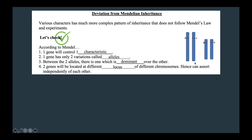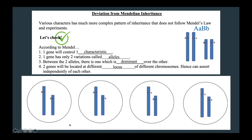For example, the genotype of this individual is capital A, small a, capital B, small b. Since gene A and gene B are located on different chromosomes, the two genes can assort independently during gametogenesis, resulting in the production of equal numbers of each gamete: AB, Ab, aB, and ab. Therefore, when a test cross is carried out on this individual, the ratio of offspring will be 1 to 1 to 1 to 1.